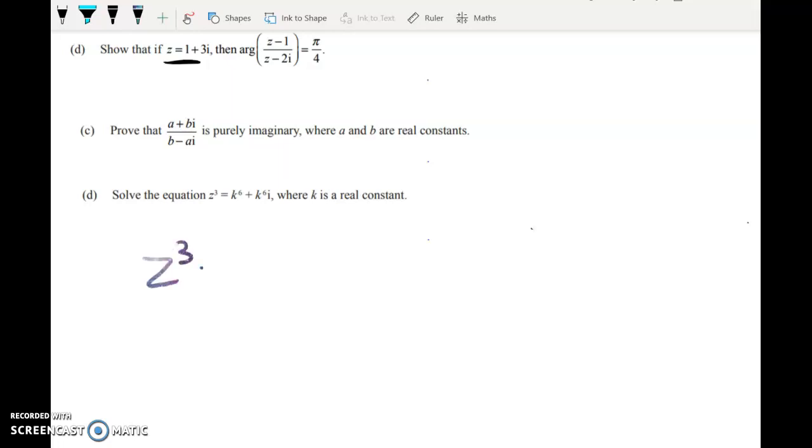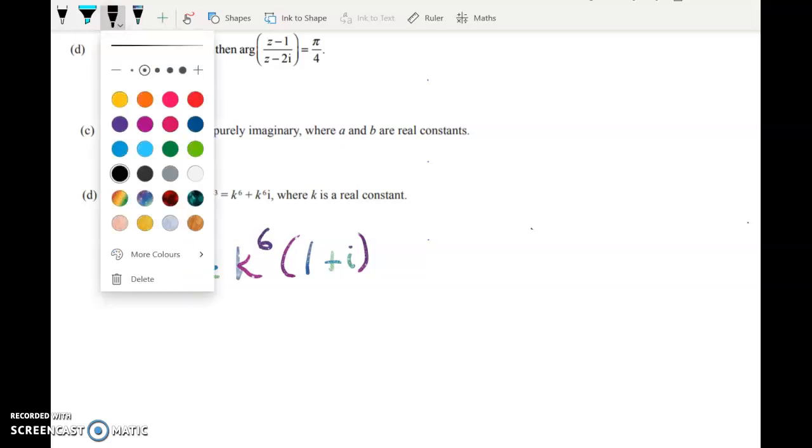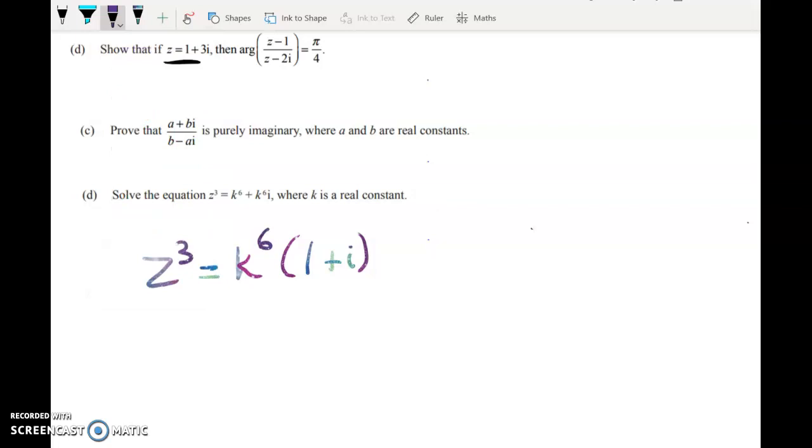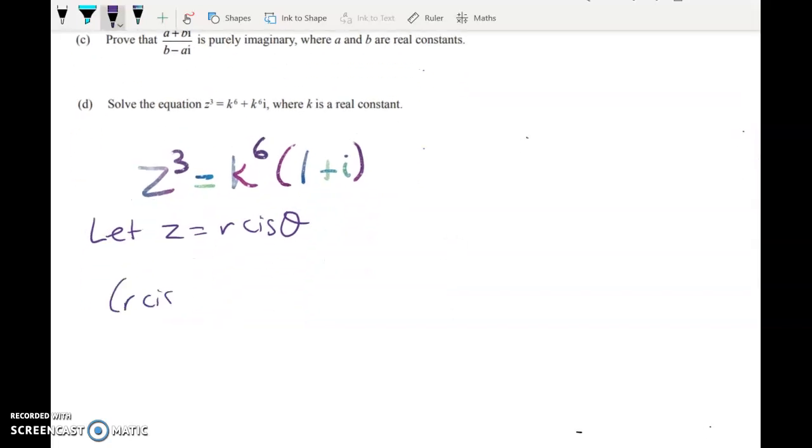So to set it up, what we've got here is we've got z cubed equals k to the power of 6 times 1 plus i. And we know we're going to get three solutions here. We know that because we've got a cubic equation. So we're going to let z equal r cis theta, right? So r cis theta cubed equals this. But we want to turn this into polar form. And we know that if we've got 1 plus i, then this is equal to root 2, right? So the modulus of that will be root 2. So we're going to have root 2 k to the power of 6 times cis of pi on 4, because that's what the angle of this is, plus 2n pi.